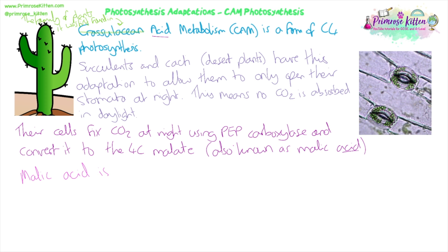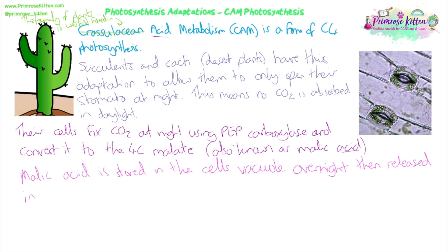The malic acid or malate is then stored in the cell's vacuoles overnight. We know vacuoles are used for storage. It then gets released in the daytime, where it can be broken down to provide carbon dioxide — in the same way as in C4 — for the Calvin cycle. We need the products of the light-dependent reactions to do the Calvin cycle, and those aren't happening at night time. So we store the carbon dioxide as malic acid in the vacuole overnight and slowly release it to provide carbon dioxide for the Calvin cycle once we have enough ATP and reduced NADP.